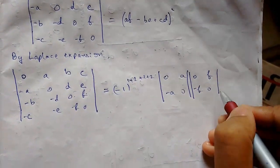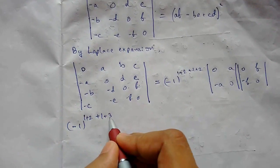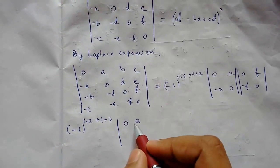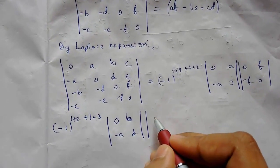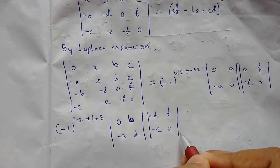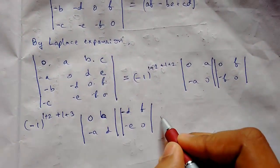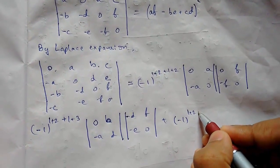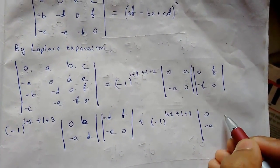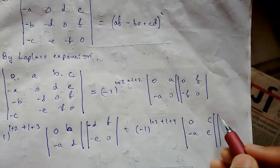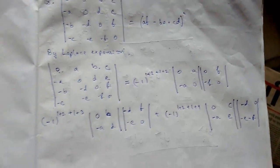Continuing with more terms: (−1)^(1+2) taking rows 1 and 3 with columns 1 and 3 gives sub-matrix 0, a / 0, b and the complementary 2×2 from −a, d / −e, 0. Then (−1)^(1+2) for rows 1 and 4, first and fourth columns gives 0, −a / c, e with complement c, e / −d, 0 / −e, f / −f entries.